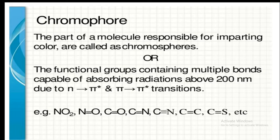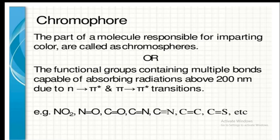A chromophore is an isolated functional group not in conjugation with any other group, and it exhibits absorption of a characteristic nature in the UV or visible region. They are generally unsaturated centers or heteroatoms or both, including groups like C=C, C≡C, C=O, COOH, NO2, N=N, and C≡N, exhibiting n to sigma-star, pi to pi-star, or n to pi-star transitions.